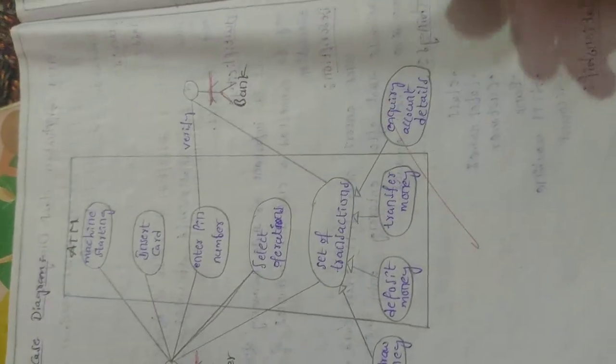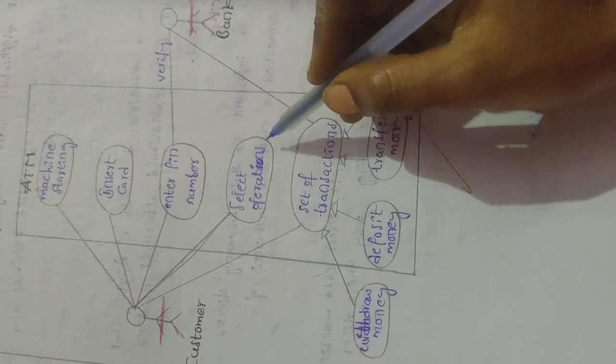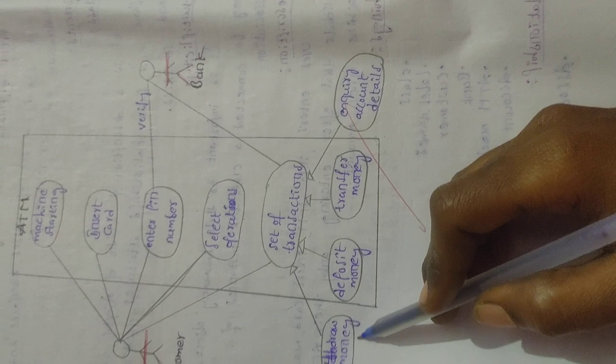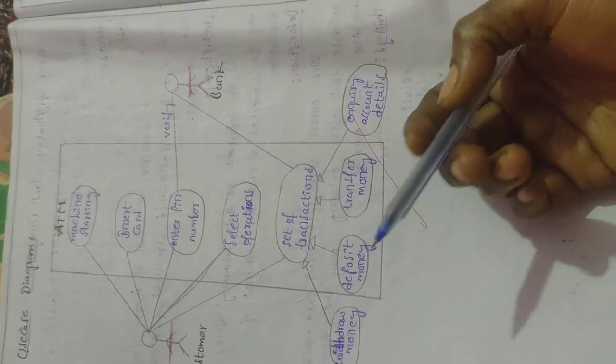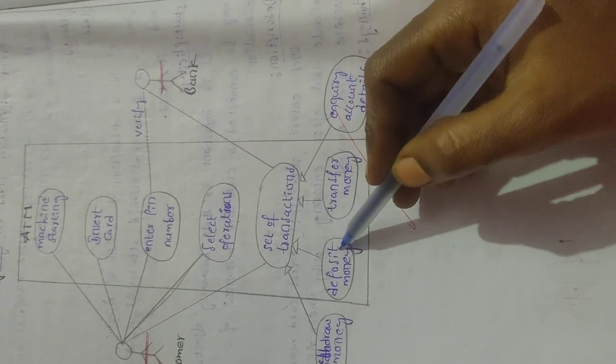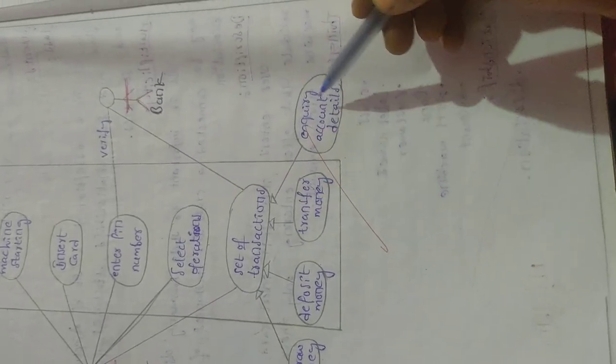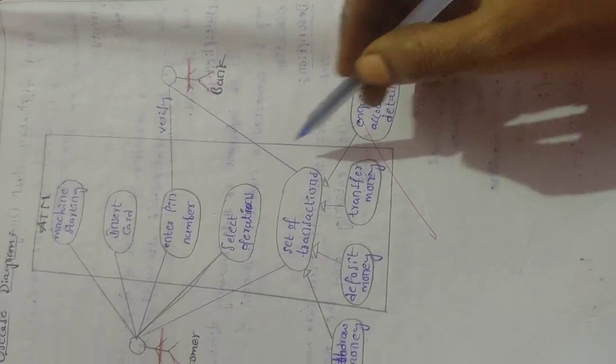Next select operations. We are going to select the operations what we need to do. If the transactions are withdrawal money, if you want to withdraw money you can withdraw. Otherwise deposit money, we can deposit money. Also we can transfer money. We can check the account balance also, inquiry account details like that.